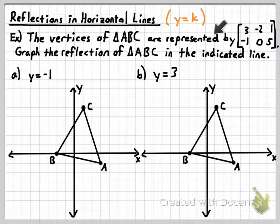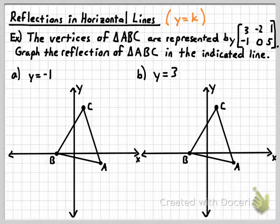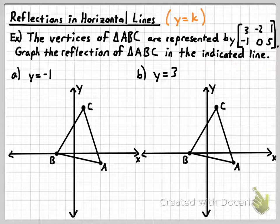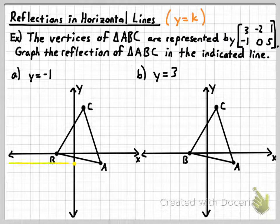The vertices of triangle ABC are represented by a matrix. We're going to graph the reflection of triangle ABC in the indicated line. Point A has coordinates 3, negative 1. Point B has coordinates negative 2, 0. Point C has coordinates 1, 5. Remember: when representing coordinates of a polygon in a matrix, the X coordinates are in the first row, Y coordinates in the second row. To graph the line Y equals negative 1, that's the horizontal line whose Y-intercept is negative 1.